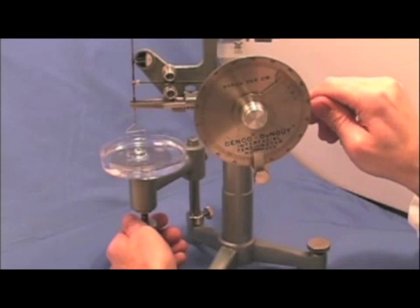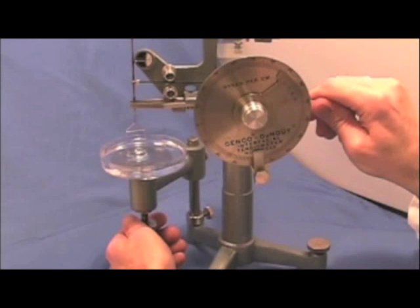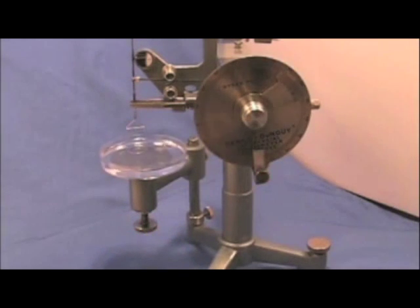I'm going to go in very small increments just again. There, now if we read the gauge we're looking at a surface tension of about 77 dynes per centimeter for distilled water.